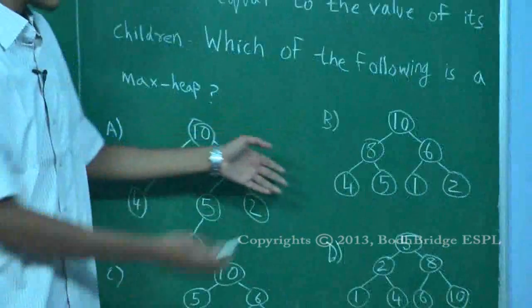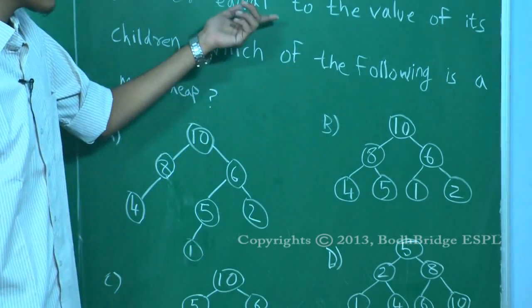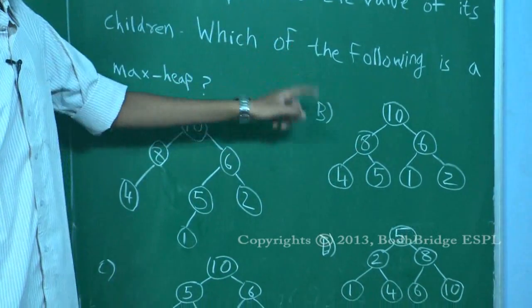Take B. B is obviously a full binary tree which means it is a complete binary tree and it satisfies the heap property because every parent is greater than its children. So B is a max heap.